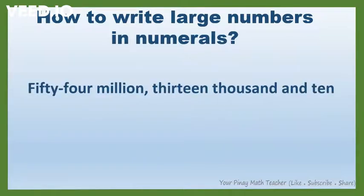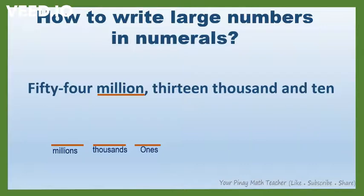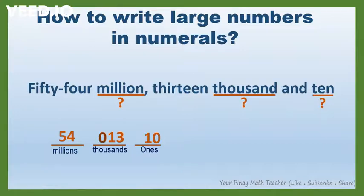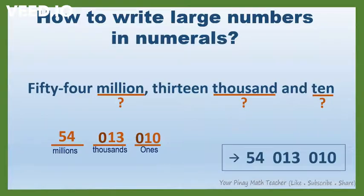How about this? 54,013,010. In this number, the highest period is the millions period. We have three groups of digits. We need to add a zero before 13 and a zero before 10. So, this is the numeral for 54,013,010.